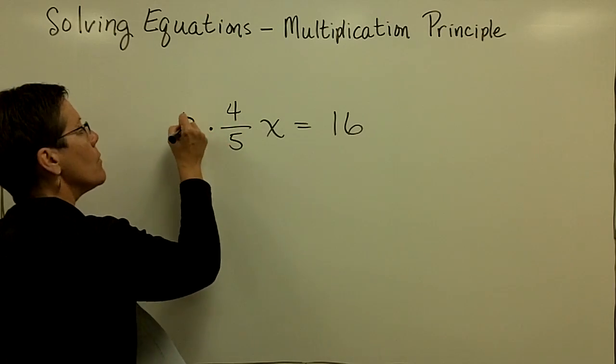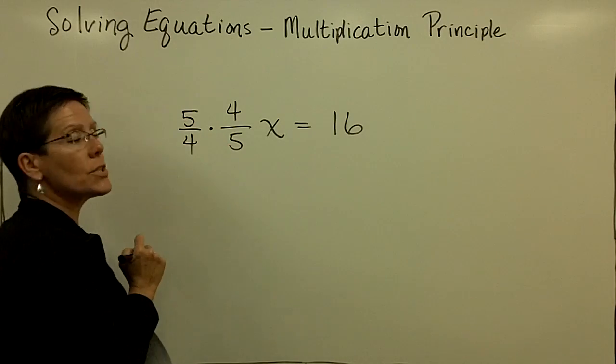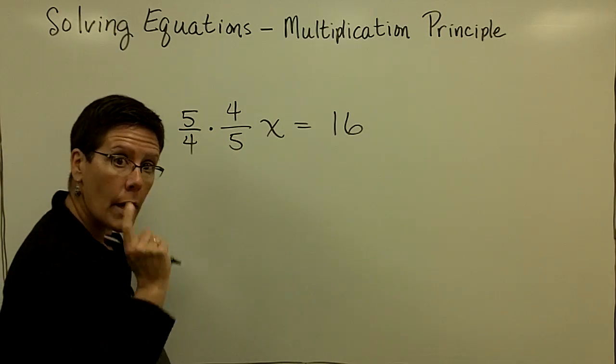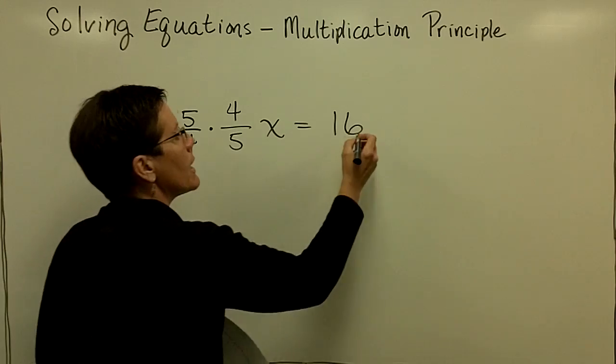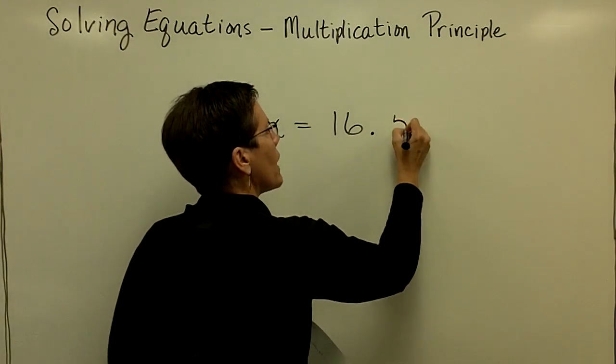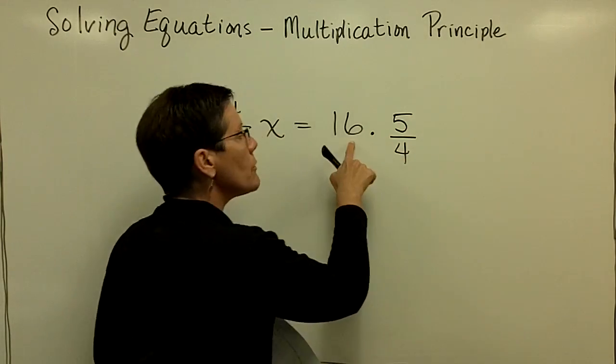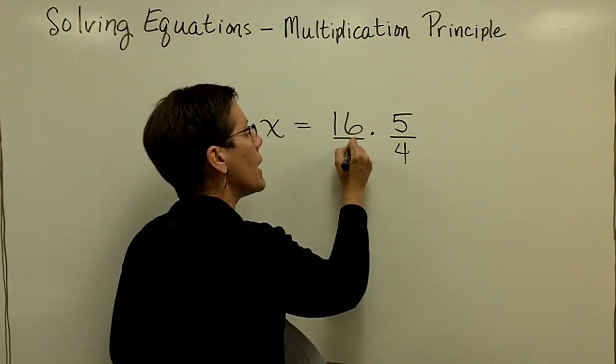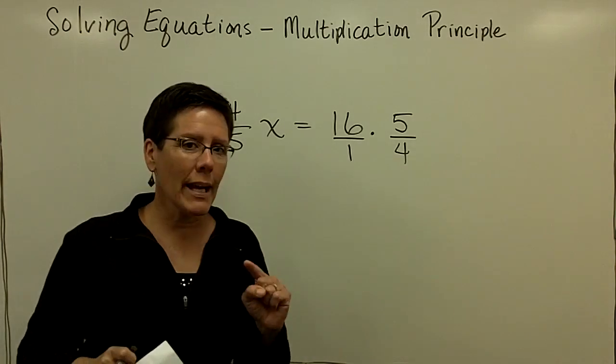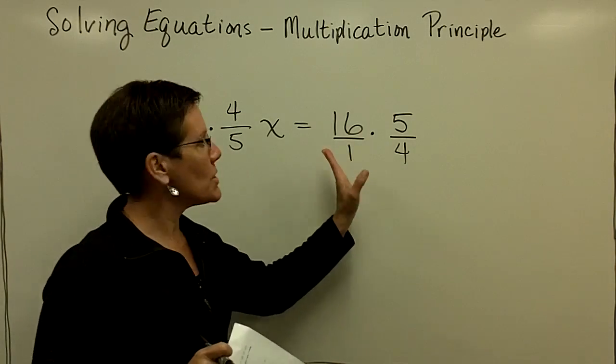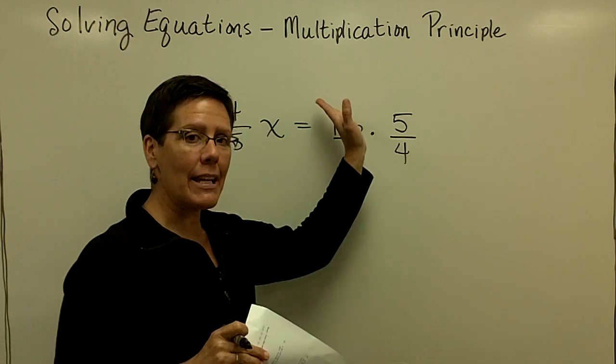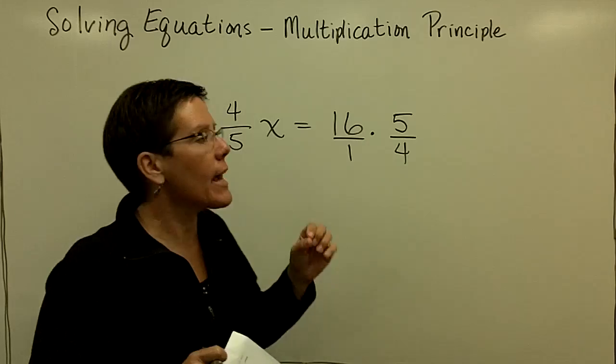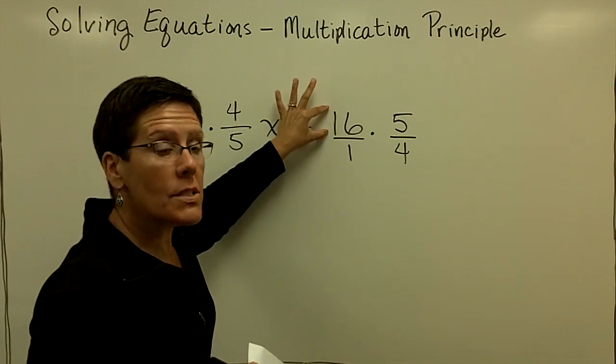Let's multiply both sides of this equation by 5 fourths because that would be 20 over 20 or 1 in front of the x. Again, I've got to multiply the 16 by the 5 fourths. Whenever you have a whole number or an integer, it can be put over a 1 at any time. So when I have a whole number and I'm working with fractions, I keep that value high, recognizing that it's in the numerator, and I stick a 1 in the denominator so I don't lose the fact that that whole number is upstairs.